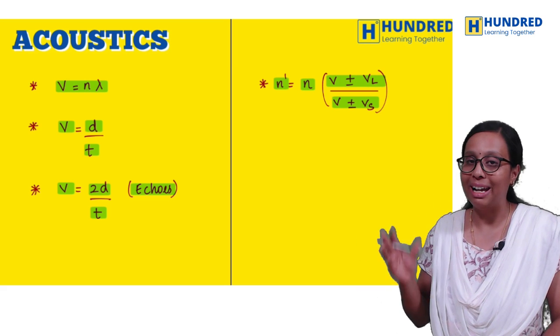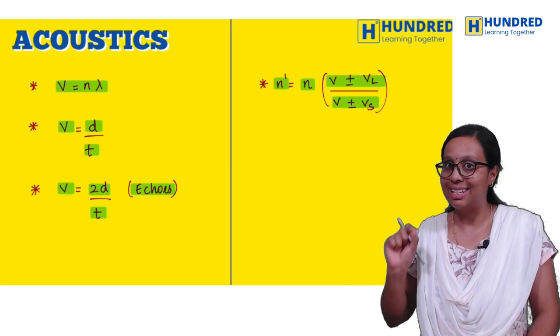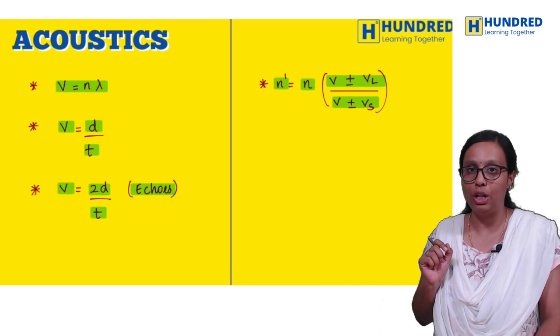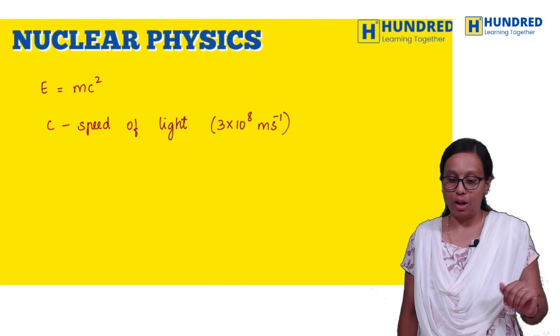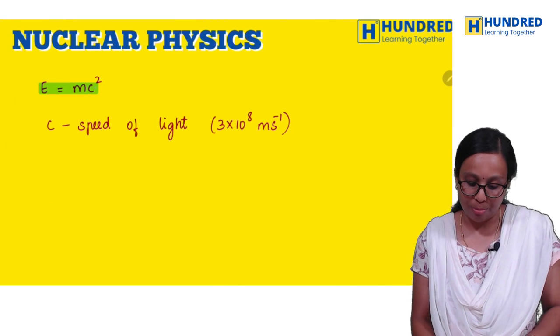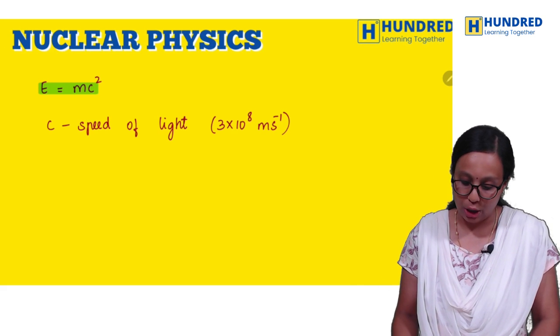And then this is Doppler effect formula: apparent frequency equals original frequency into V plus or minus direction. Doppler effect explained in science easy tips and tricks, you can go through that video.